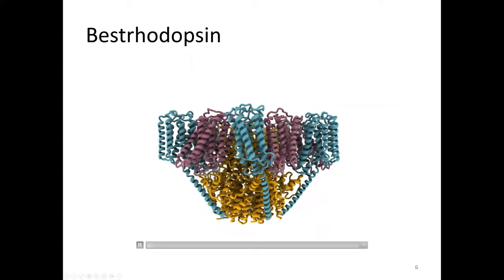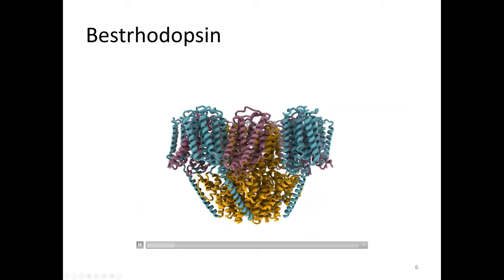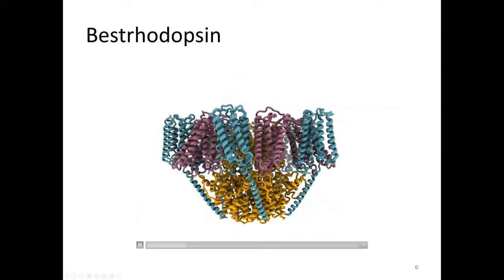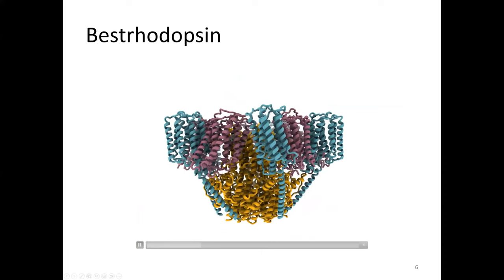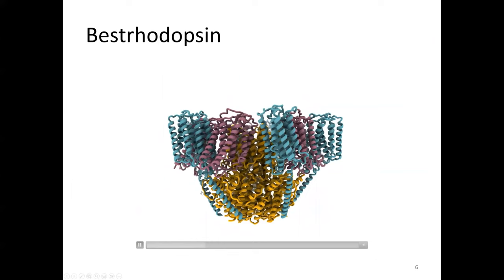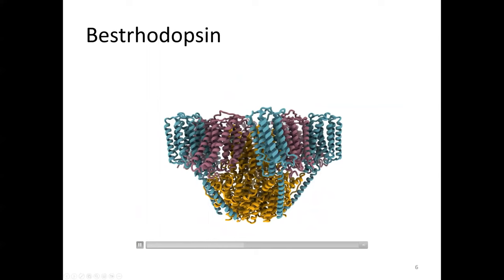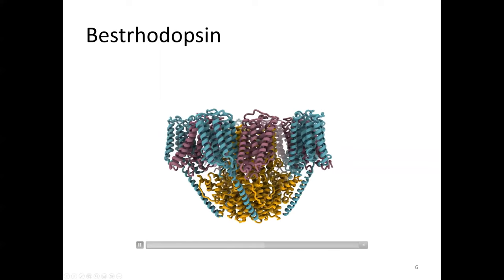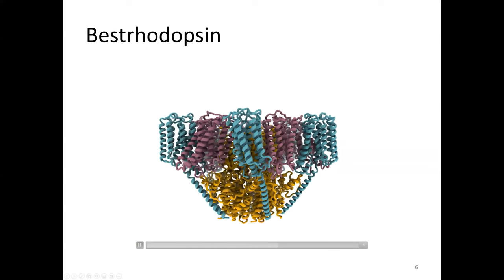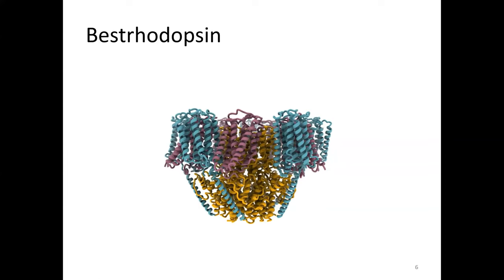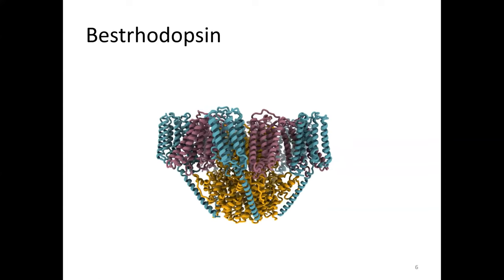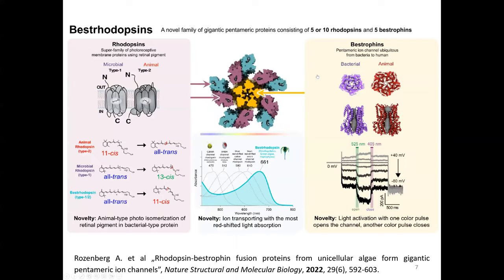As you can see here, each rhodopsin domain has eight transmembrane helices which are linked to each other and then through a long linker they are connected to bestrophin. This bestrodopsin is a pentamer. In the middle you see five units of bestrophin forming an ion channel and then in the periphery you have a link of two different rhodopsin domains. From the side you see that the first rhodopsin domain is directly linked to the upper part of the bestrophin channel, but the outer domain also has a long linker shown here in cyan, which is linked to the bottom of the bestrophin channel.